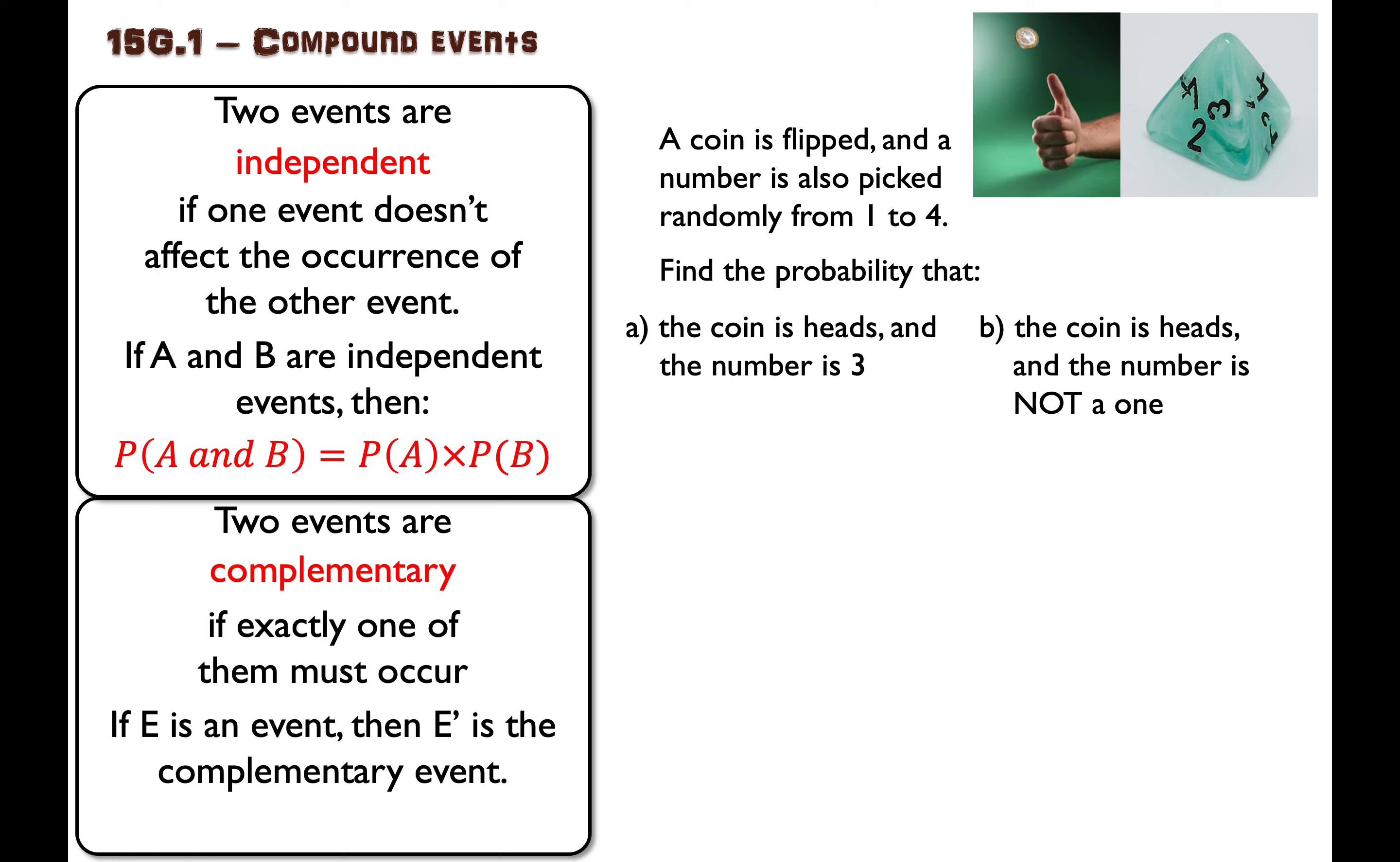So, for example, me flipping a coin and getting heads and me flipping a coin and getting tails. Me rolling a die and getting a one or me rolling a die and getting not a one.